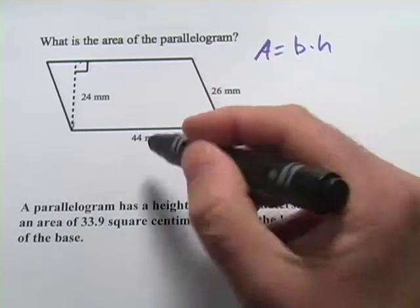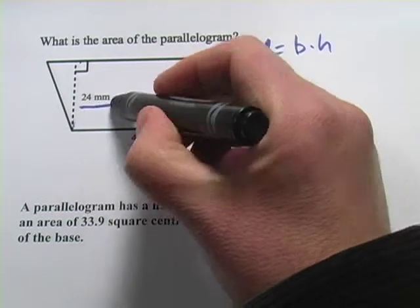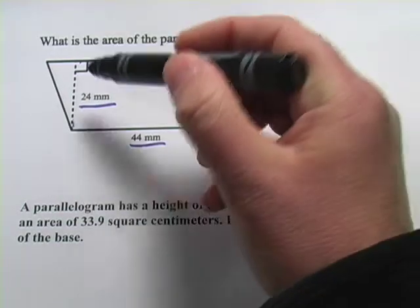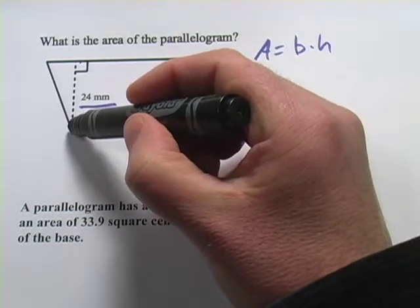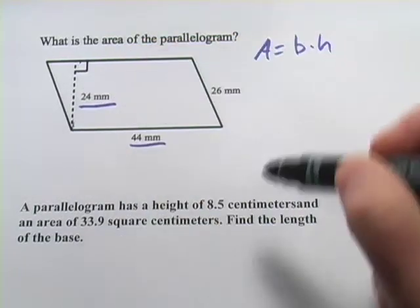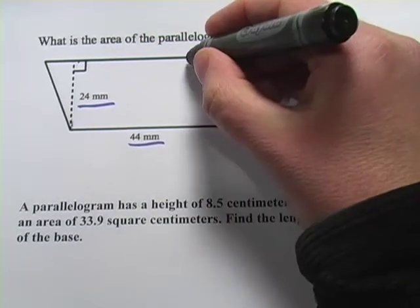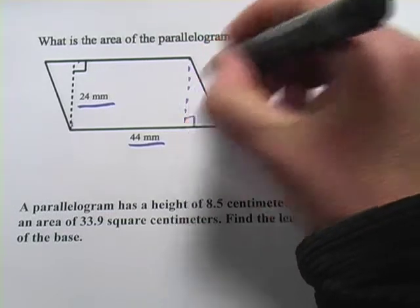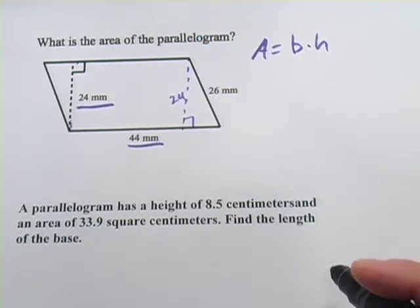In this diagram, they've given us both. Here's the base, here's the height. You can see you get the height by going up from one of the vertices here and making a perpendicular to the other side. You could draw height here too, and that would be the same, 24 millimeters.